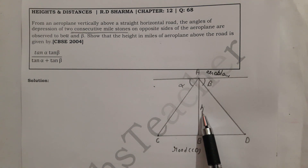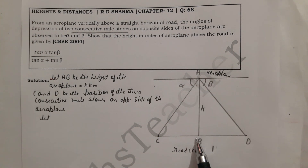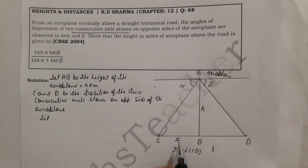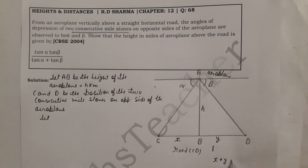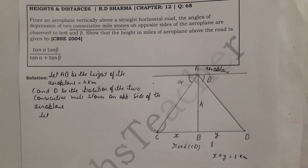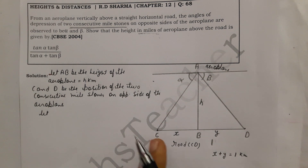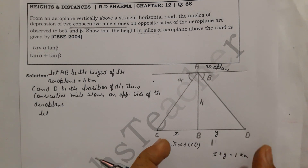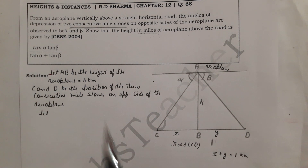What is given: H is the height, and C and D are the two milestones. Let CB equal x and BD equal y, so x plus y equals 1 mile, since it is the total distance between consecutive milestones. This is the key fact — if you don't know this, you will not be able to answer this question.